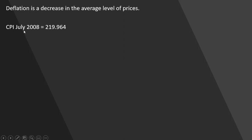The consumer price index of July 2008 in the United States was almost 220. And the following year, in July 2009, it was actually a little bit lower: 215.351. So the average level of prices as measured by the consumer price index fell. This is an indication of deflation.